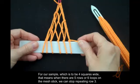For our sample, which is to be four squares wide, that means when there are five rows or six loops on the mesh stick, we can stop repeating row three.